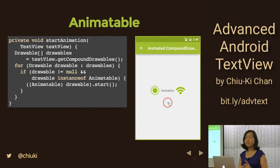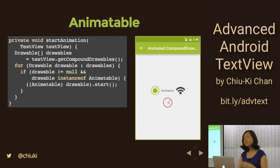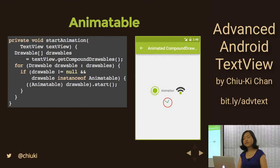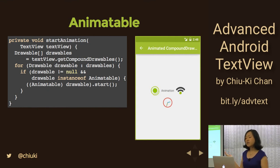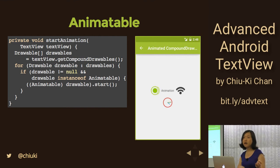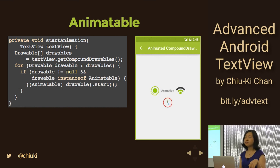With all that, we still need to do one more thing to make it animated. You need to start the animation by going through all the drawables attached to the TextView. That's what the first line does — it gets you an array of drawables and you iterate through them, check that it's not null and that it implements Animatable, then call start(). It would be good practice to call this in onResume so animation only runs when someone's looking, and call stop() in onPause.